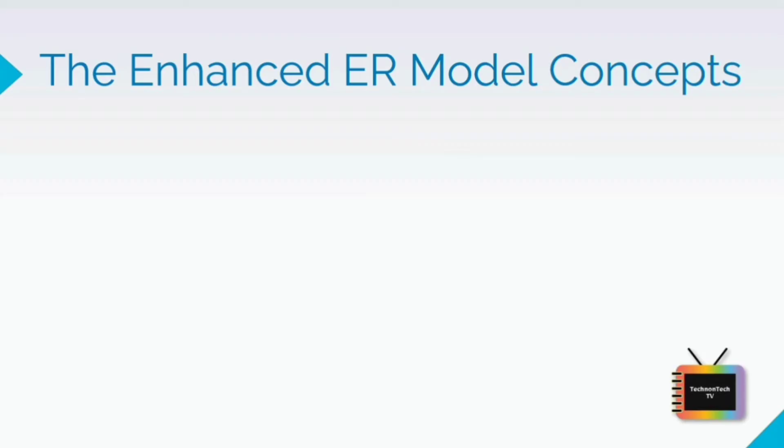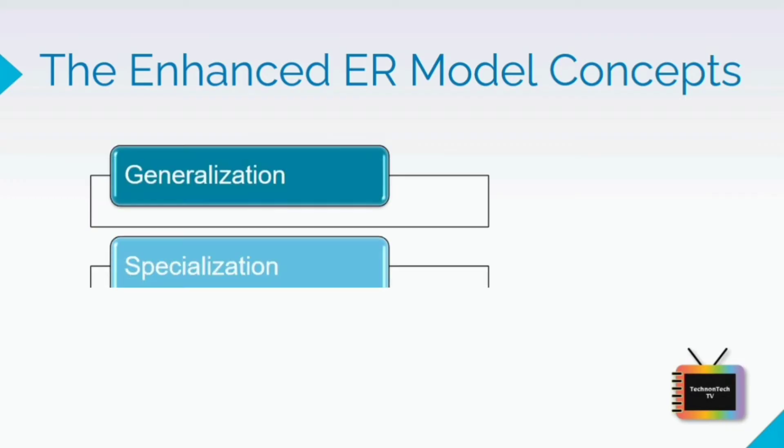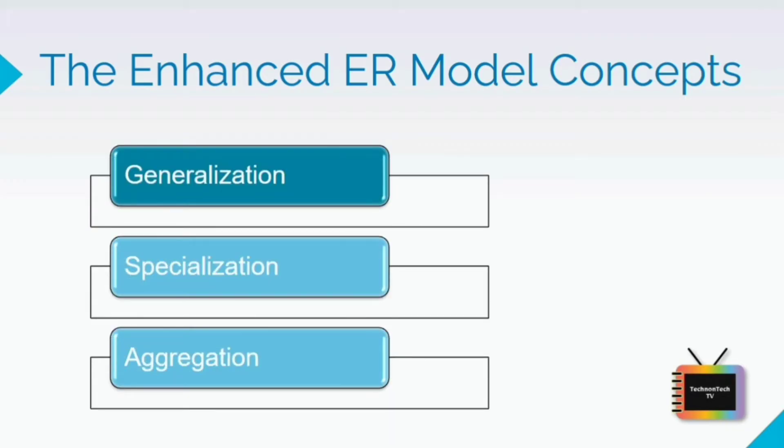To make it able to handle complex applications better, as part of the Enhanced ER Model, three new concepts were added: Generalization, Specialization, and Aggregation. Let's understand what they are and why they were added to the existing ER model.